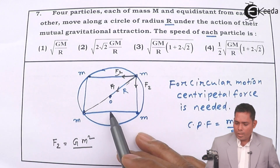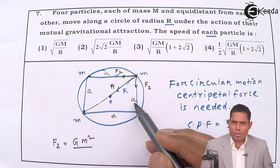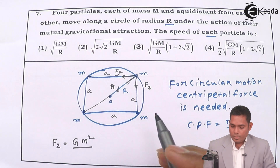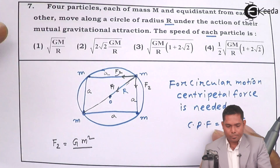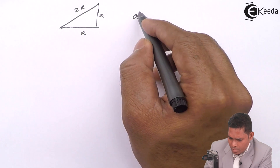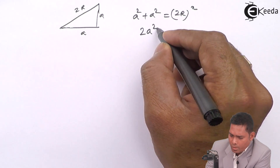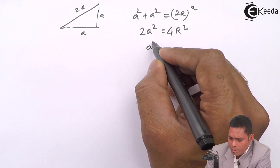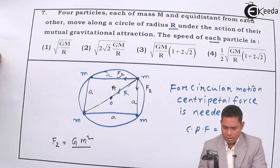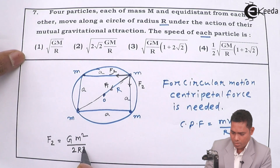From A² = 2R², we substitute back: F2 = GM²/A² = GM²/(2R²). This is the magnitude of each of the two adjacent forces F2.